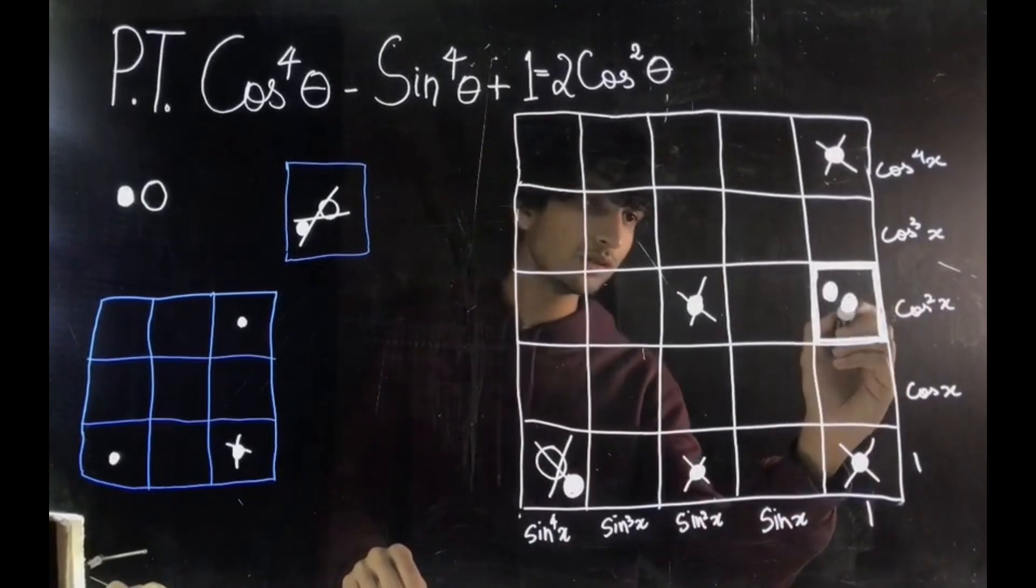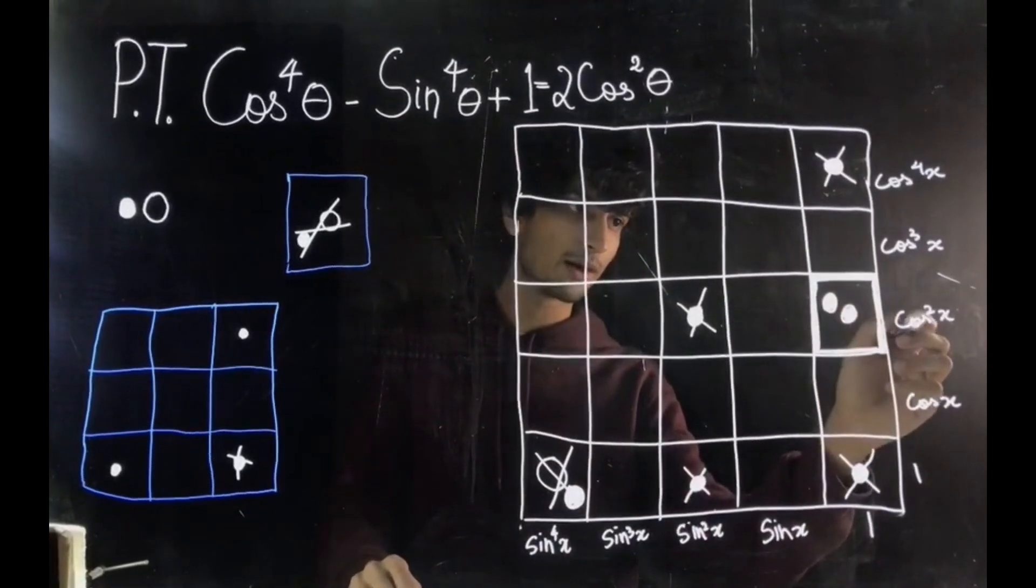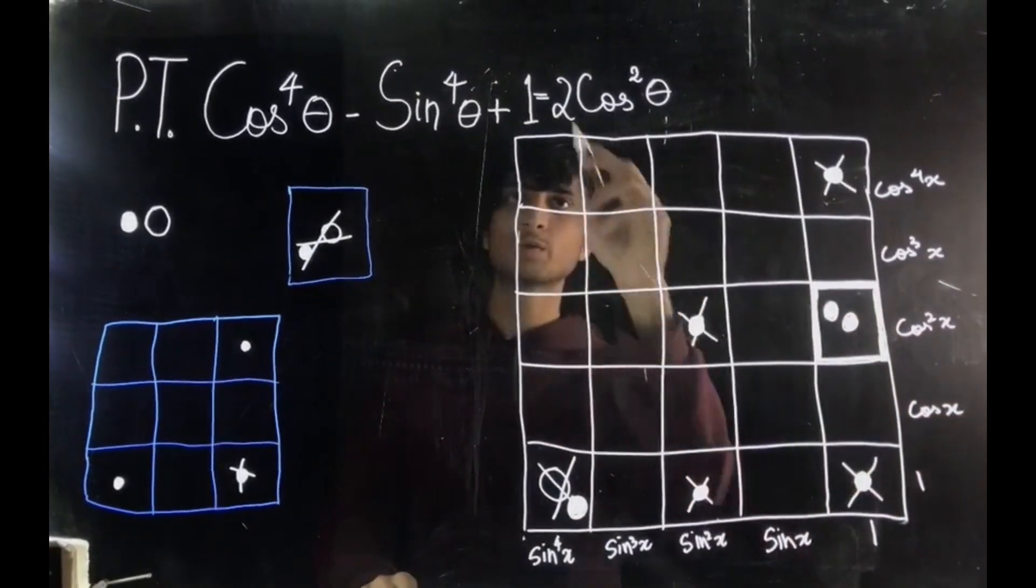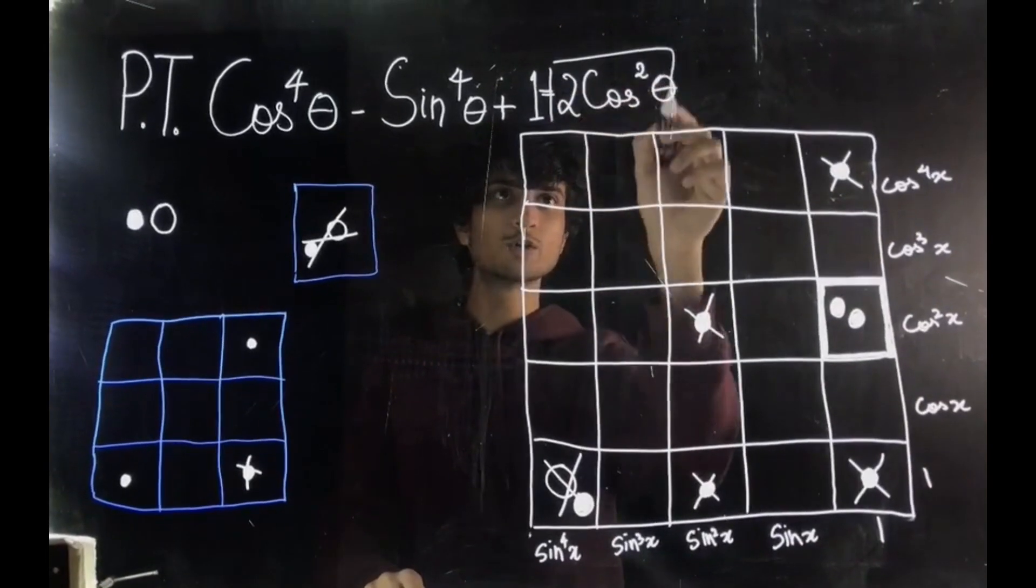And what did we end up with? Two dots in the cos square x. So we got our required answer: 2 cos square x.